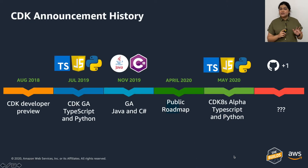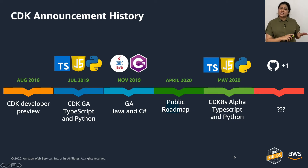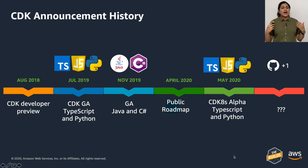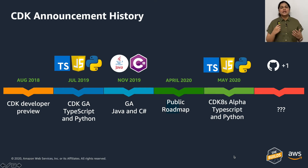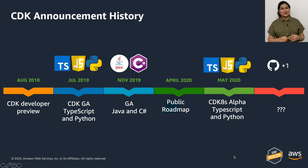CDK was announced in 2018, so it's not really new, but it went GA with a few languages sometime around last year. We also released its roadmap because we are doing a lot of awesome things with developers, and because it's open source, many people are contributing back to CDK. You can view this roadmap on GitHub. We also announced CDK for Kubernetes — if you like something on the roadmap, go ahead and do a plus one, and feel free to contribute.